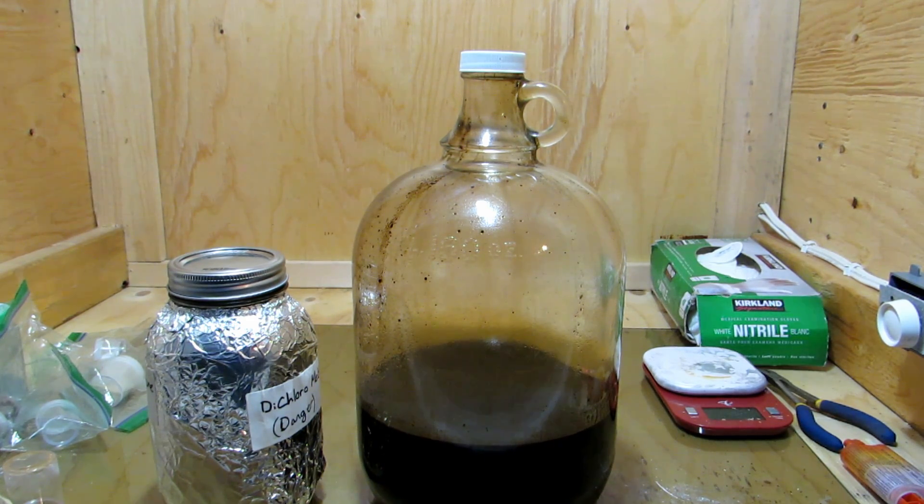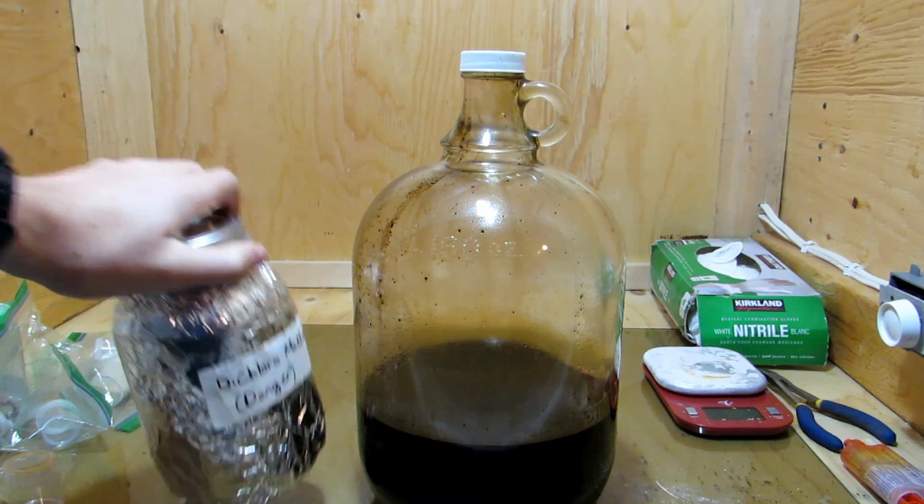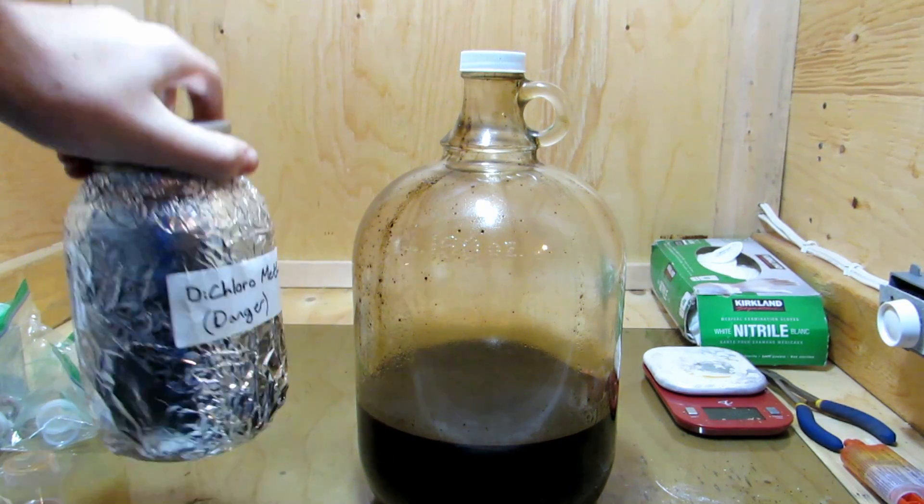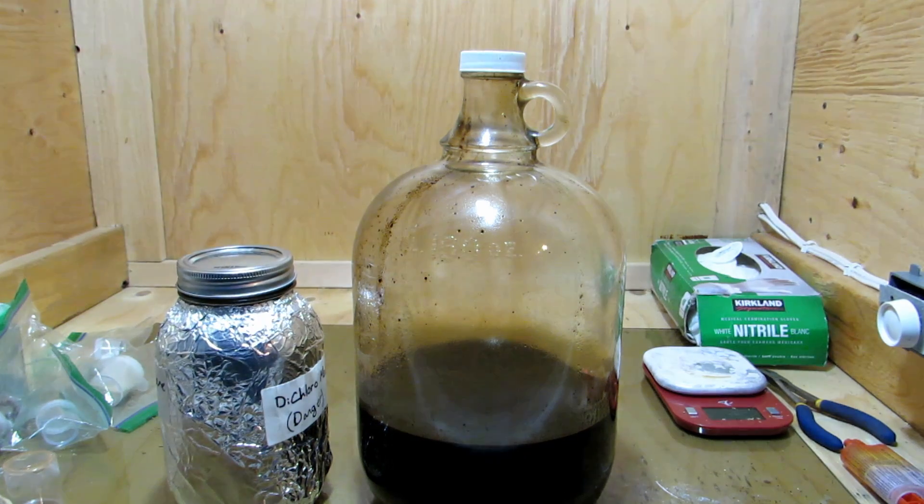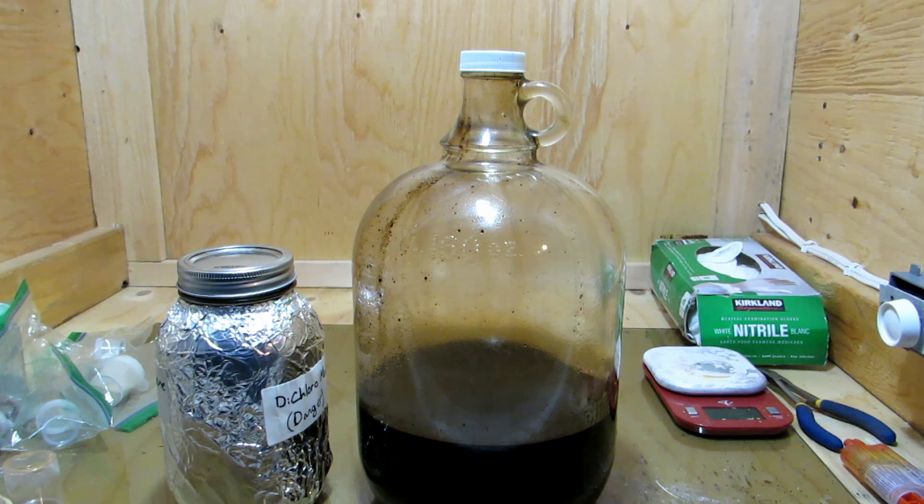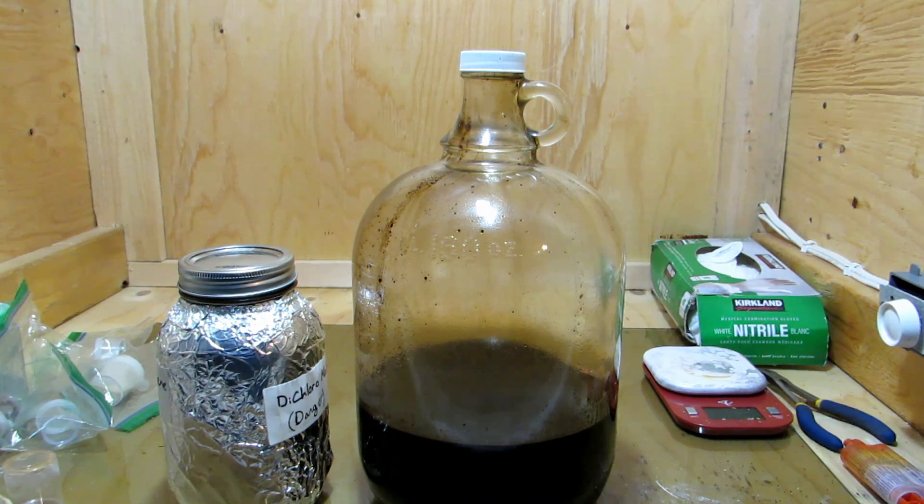To extract our caffeine, we're actually using this dichloromethane here, which is what we produced in a previous video. We distilled it from varnish remover. I believe we have about 800 milliliters in there, and we're going to be using all of it. Of course we can recover it, so it's not like we're wasting any.